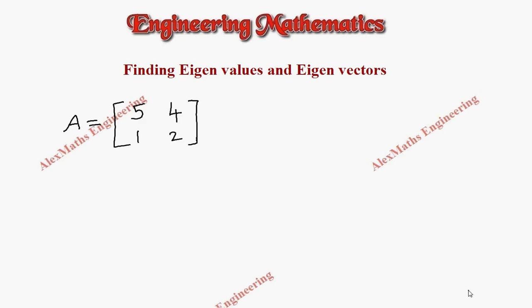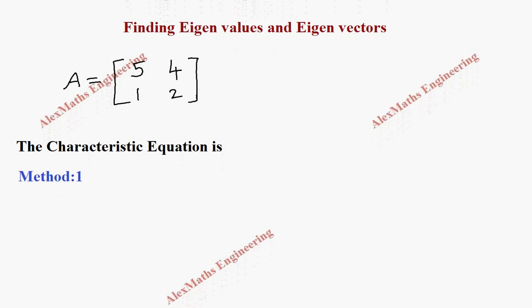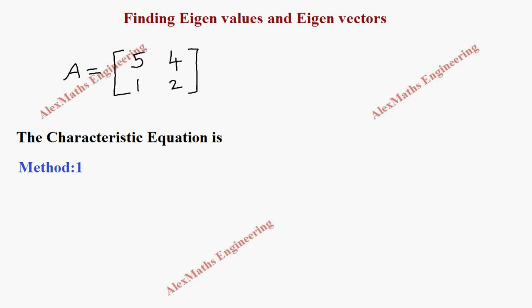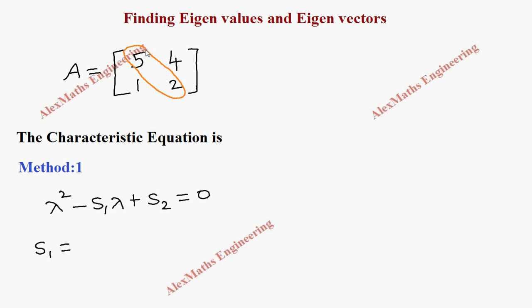Hi students, this is Alex. In this video we are going to find the eigenvalues and eigenvectors for the given matrix A. First we have to write the characteristic equation. There are two methods — let's discuss the first method. In the first method we are going to use the equation lambda squared minus S1 times lambda plus S2 equals zero, where S1 is the sum of the main diagonal elements. From here we find S1 is 7.